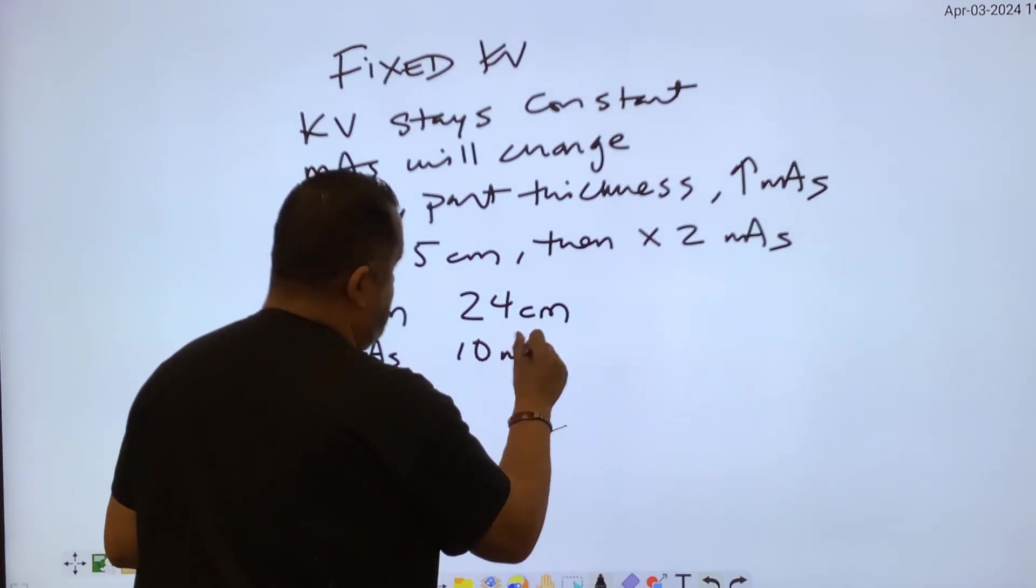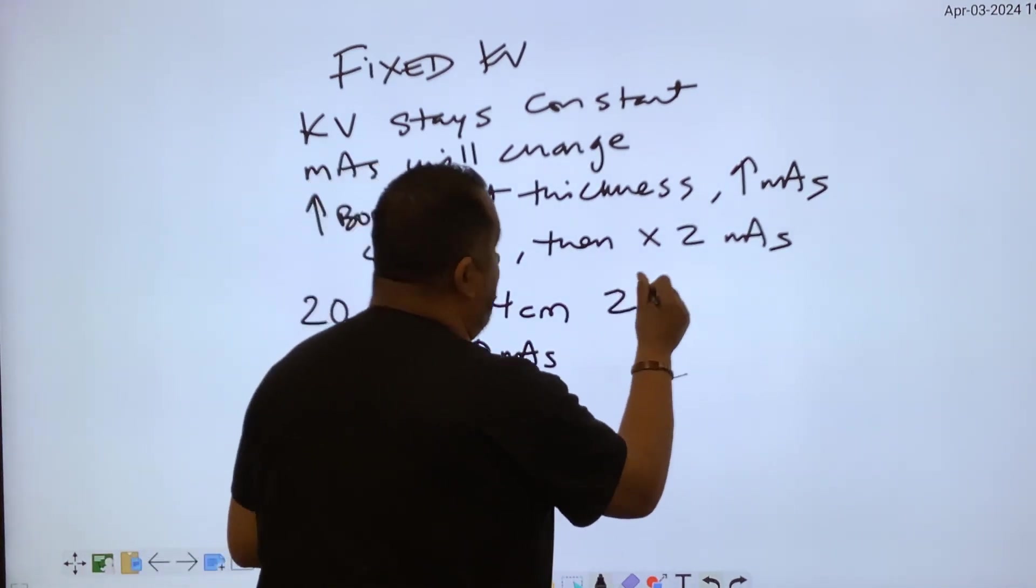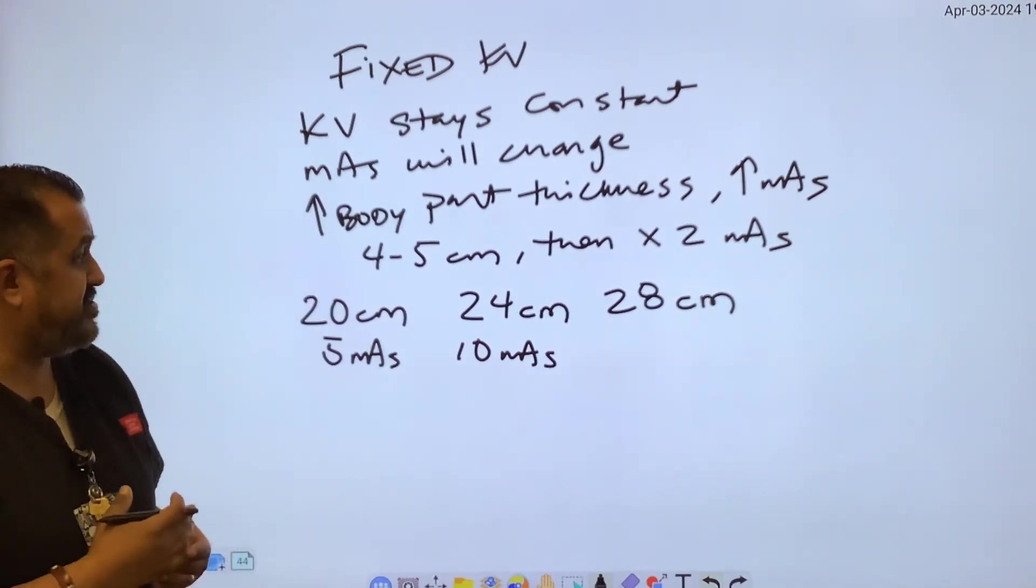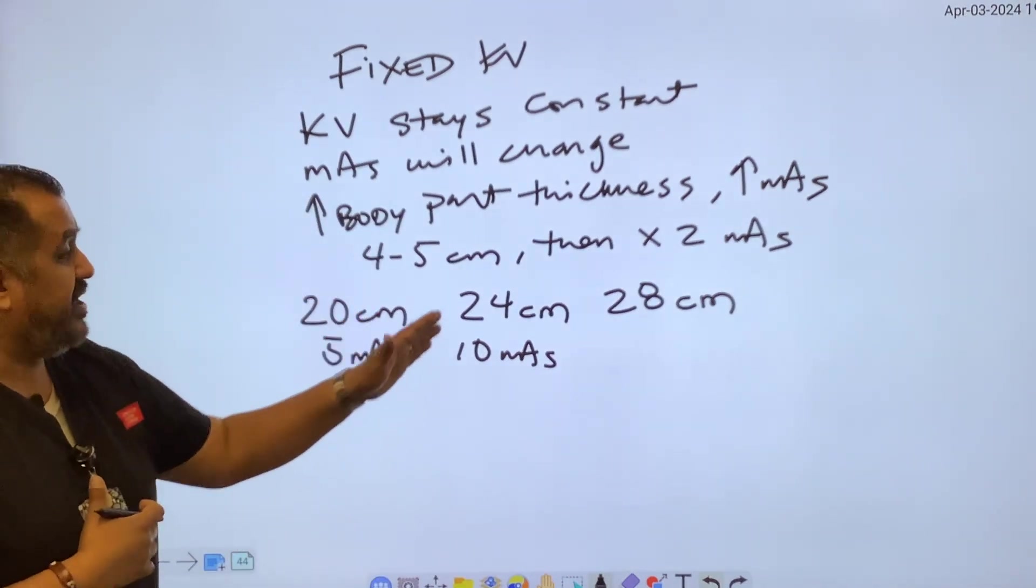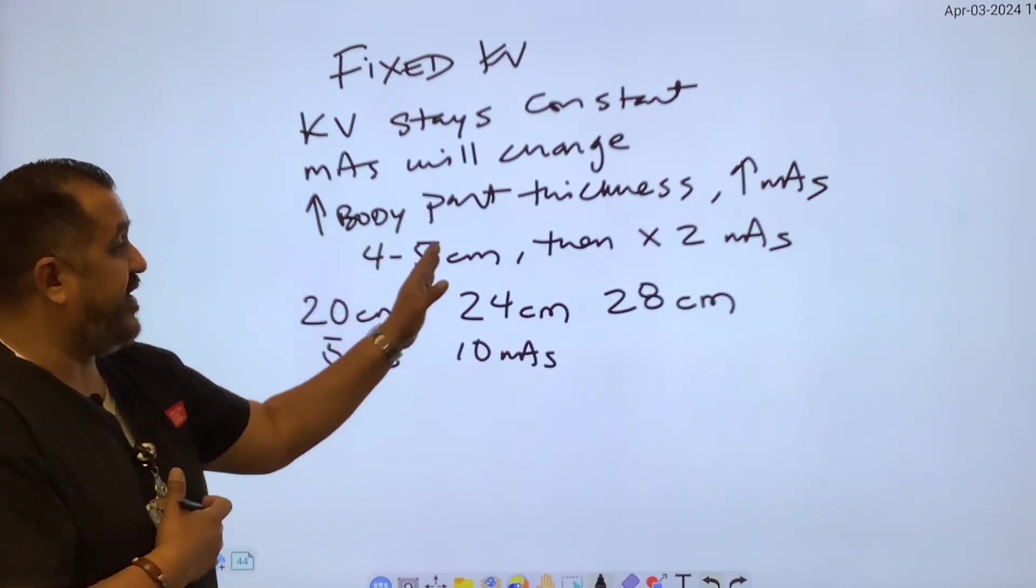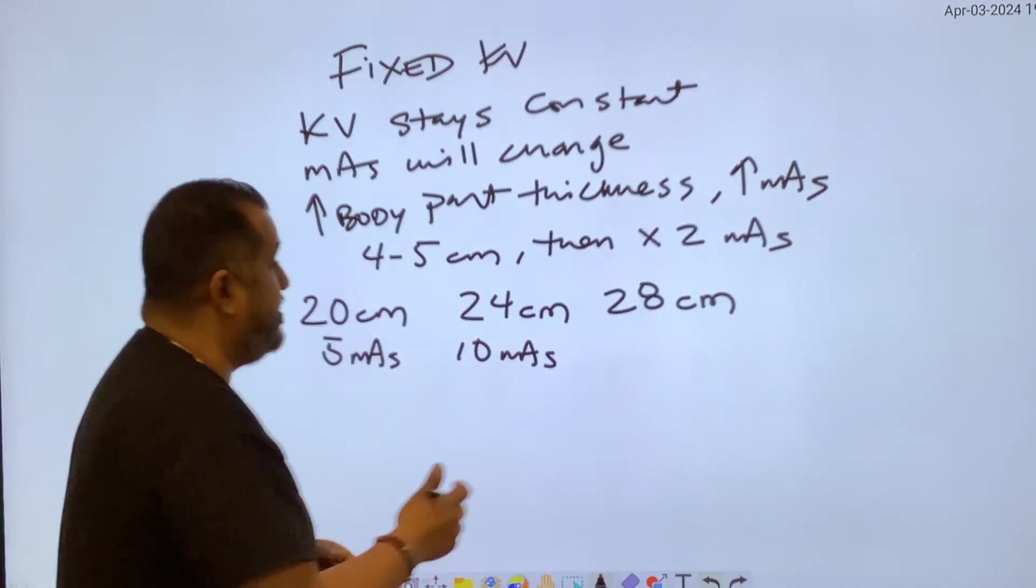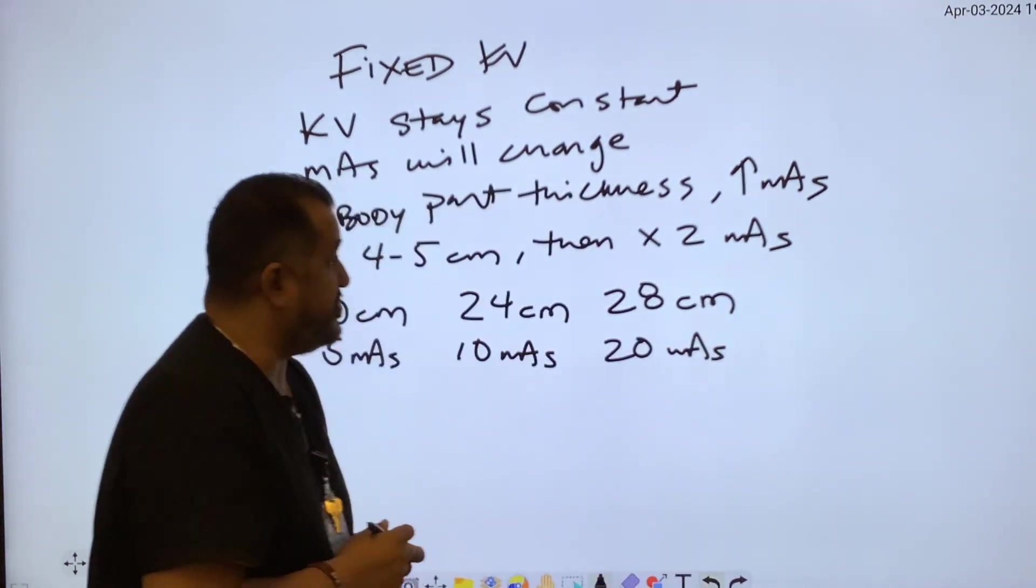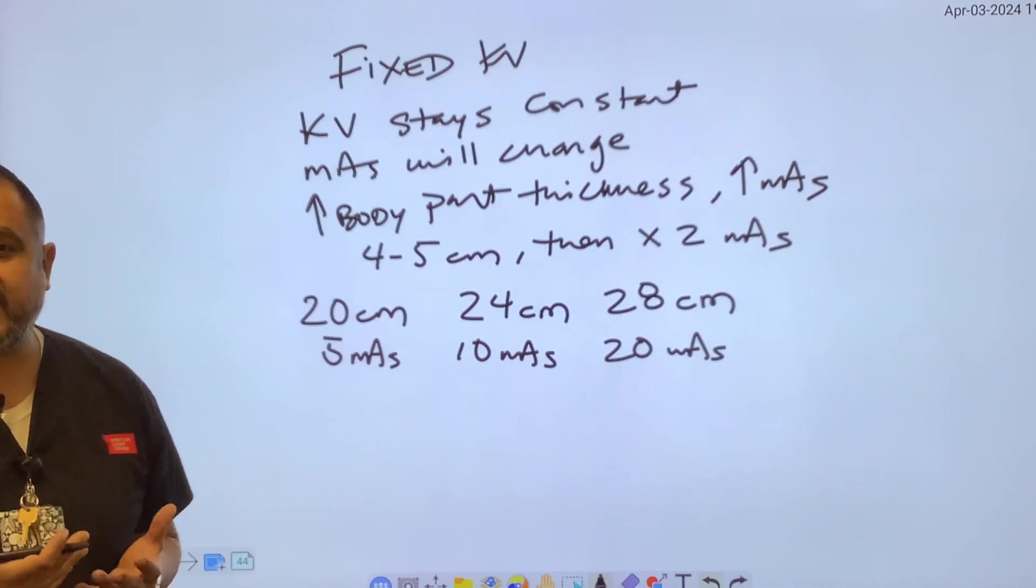Let's say you go to 28 centimeters. I'm just using these numbers as an example - these are all hypothetical. So if you go from 24 centimeters to 28 centimeters, again, you're jumping four to five centimeters, you got to double the mAs. So then the mAs is going to jump to 20 mAs. This is going to be a fixed KV technique chart.